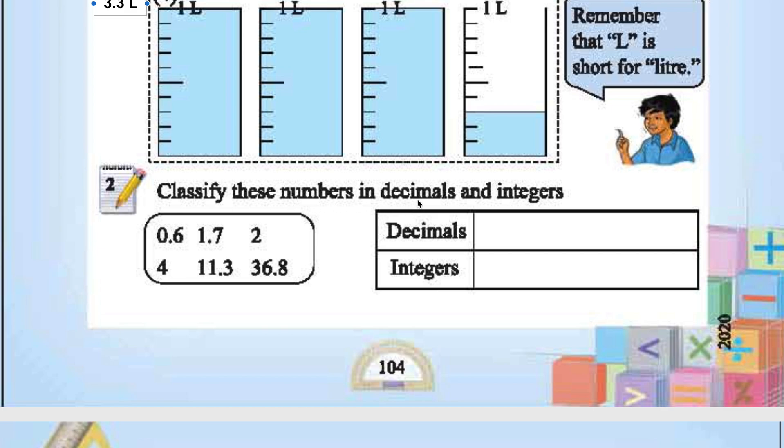Classify these numbers in decimals and integers. 0.6 is decimal. 1.7 is decimal. Wherever there is decimal point, that number will be decimal. 11.3 is decimal. 36.8 also is decimal. Only integers are 2 and 4.